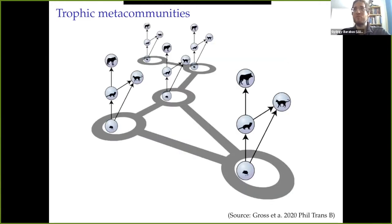This beautiful illustration appeared in a recent review on the topic, where you can see various habitat patches, and some of them are connected by dispersal. The cool thing is that each of those patches has not just a single population of a species, but a whole community in it.